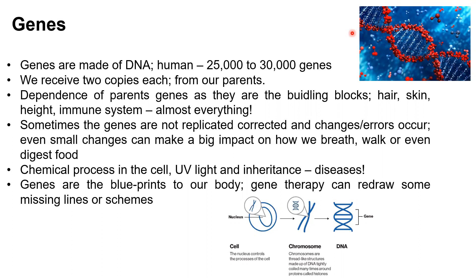Mutations in our genes occur because of chemical processes going on in the cell. Environmental factors may also be involved — the way you eat, your environment, and your exposure to external mutagens such as UV light. The third cause is inheritance: something you get from your parents. If both copies or one copy of a gene have a defect, you would have a disease or a faulty gene passed down to you.